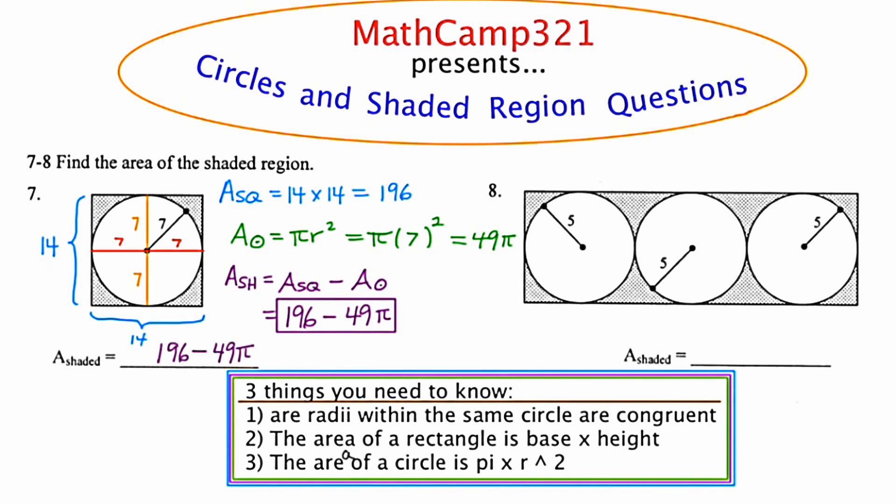Let's move to number 8, which is the same exact concept but a little more complicated, because instead of having one circle stuffed inside of a rectangle, there are three circles stuffed inside of a rectangle. But the process is going to be the same: start by reorienting those radii. Instead of them jutting off on angles, I'm going to make them go horizontal and vertical.